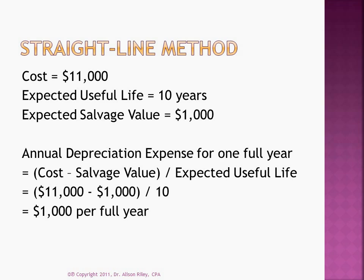Now let's look at straight line depreciation in more detail. Suppose we have an asset that costs $11,000 and has an expected useful life of 10 years. Suppose also that the asset is determined to have an expected salvage value — another accounting estimate — of $1,000 at the end of its useful life. The salvage value is the dollar amount we expect to be able to liquidate the asset for when we are finished using it. In this example, annual depreciation expense is $1,000 per full year, calculated by deducting the salvage value from the asset cost and dividing the result by the expected useful life.